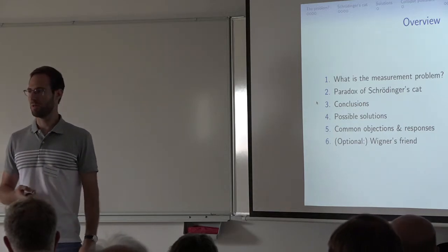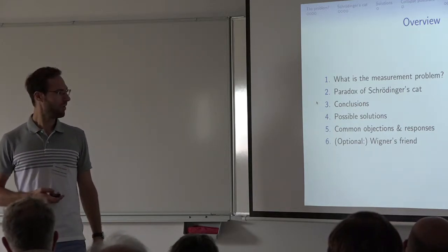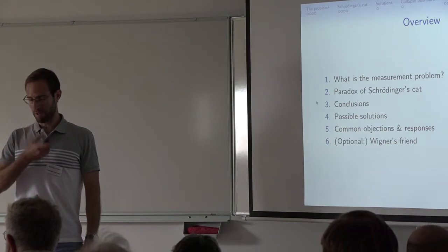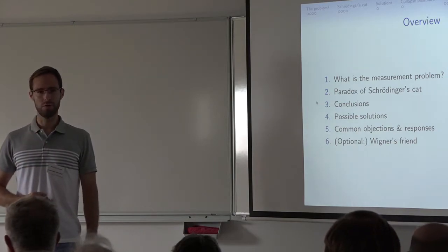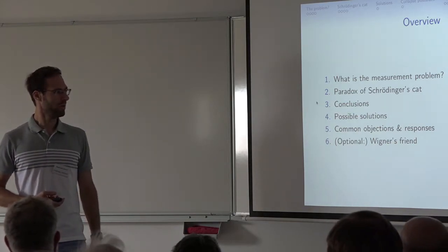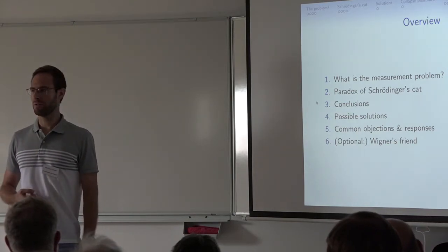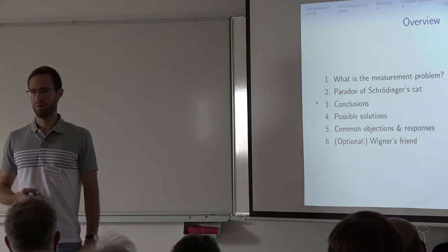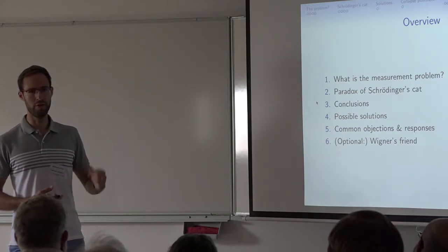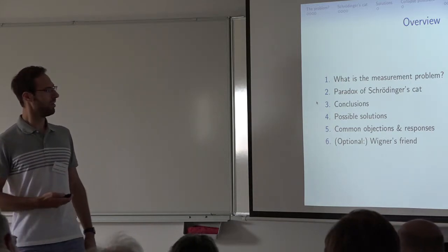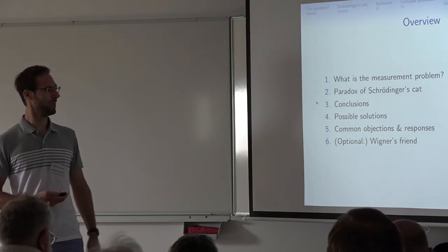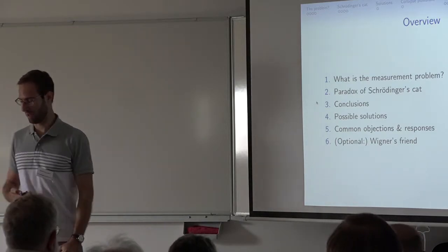All of these will center around taking different conclusions from the measurement problem, but all of them were solved. And then I will also discuss some objections to there being a measurement problem, and respond to them. And finally, if we still have time, I will also explain a different but very related paradox — Wigner's friend — which you could say is more or less the same but with some twist on the measurement problem. But only if we have time.